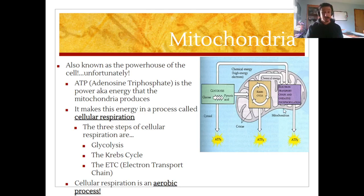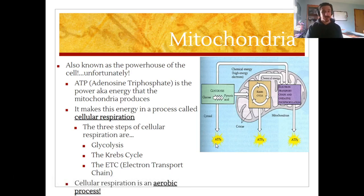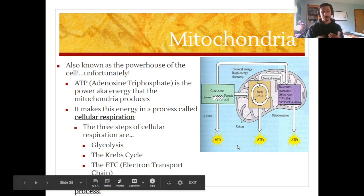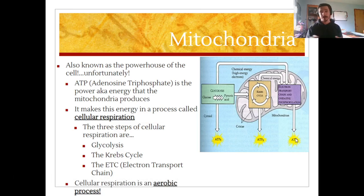Please notice that every step of this process does produce adenosine triphosphate — ATP, energy for your cells. Why would every step produce energy? Well, that's because every step requires energy. So in the first two steps, you're mostly just replacing the energy used to carry out these procedures. It's not until the very last step — the electron transport chain — where you have a very large net gain of energy within the cell that can be used elsewhere to power other events within the organism.